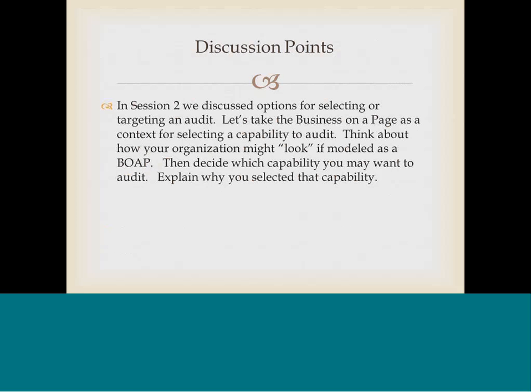In session two we discussed options for selecting or targeting an audit. I'd like you to think about your organization — take some time to think about your organization as a business on a page. Your first view of this doesn't have to be perfect, but just think of it in those terms, because this will be the context for selecting the capability to audit. Think about how it might look if modeled as a business on a page, then decide which capability you may want to audit, and share with us why you selected those capabilities.